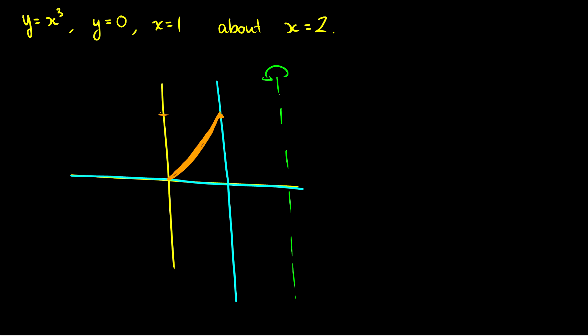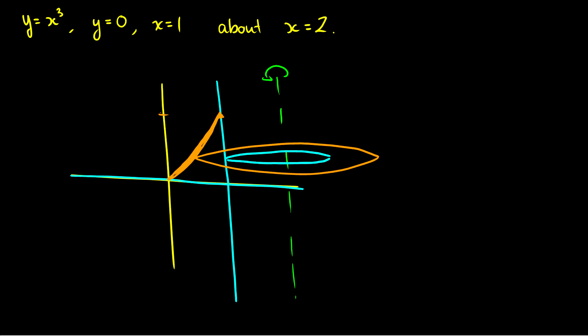Let's draw a slice. The outer slice and inner slice correspond to different radii. The inner radius is straightforward: we're rotating at x = 2 and our boundary line is x = 1, so the inner radius r_in is just 1.